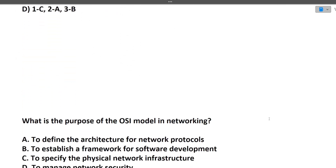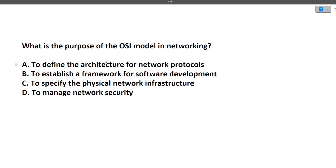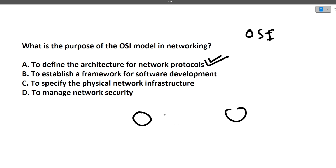Next question: what is the purpose of the OSI model in networking? The OSI model defines the architecture for network protocols. It defines a standard way in which all things are defined when sharing data between two devices. This is the correct option — it defines the architecture of network protocols.